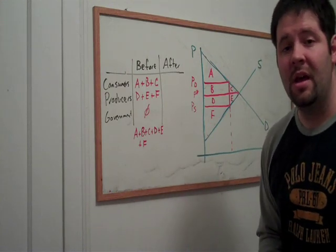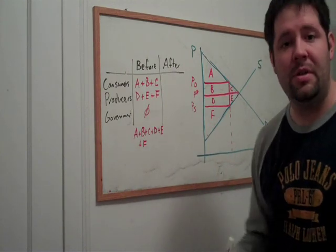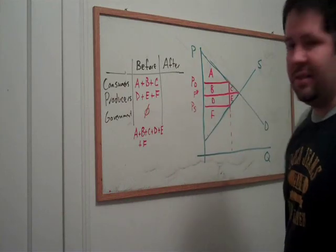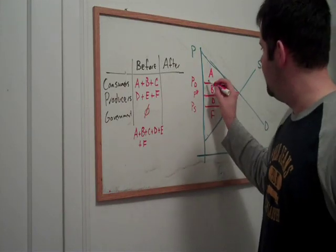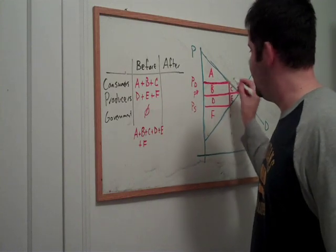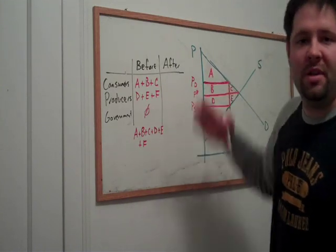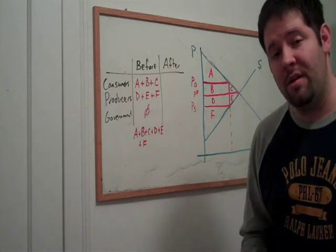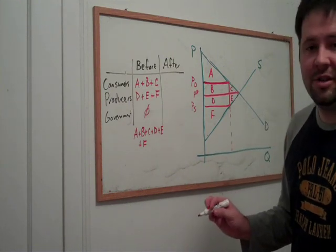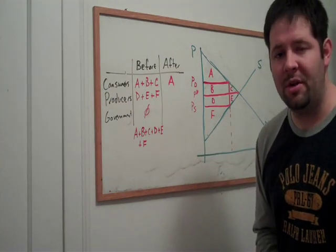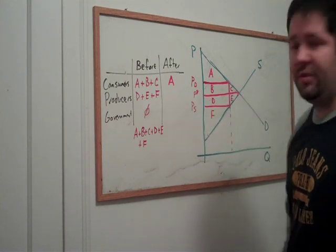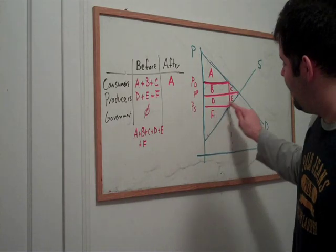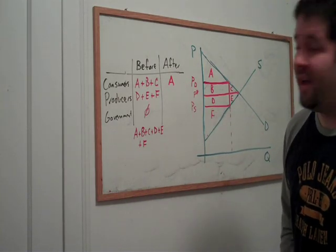When we introduce a tax, a couple of things happen. First, the price for demanders rises. And so what we can see is now the consumer surplus is this triangle above PD up to the demand curve, out to the new quantity which is now lower. That's just A. What happened to producer surplus? Well, similarly, the price for producers decreased. And now the triangle is just triangle area F.